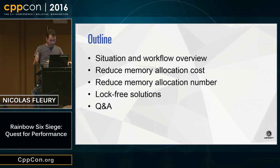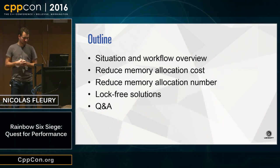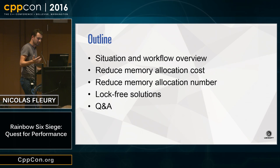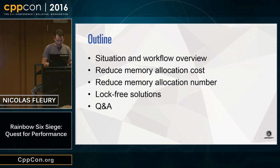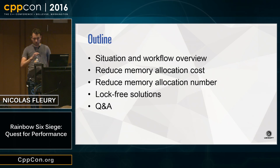I want to talk about performance and focus on things interesting for any C++ programmer interested in performance, not only people in the gaming industry. So we're on the same page: I'll start with an overview of our situation and the workflow for performance on Rainbow Six. Then from memory locations, I'll discuss how we reduce both their cost and their number. Then we'll conclude with some lock-free solutions that we've used. There's a lot of stuff in my talk, so please keep questions for the end.